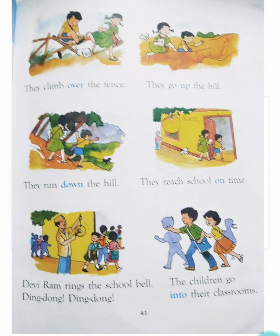वो hill के उपर जाते हैं — they climb up to the hill and start climbing it. They run down the hill — और वो पहाड़ से नीचे आते हैं. They reach school on time — और वो school एकदम time पर पहुँच जाते हैं।